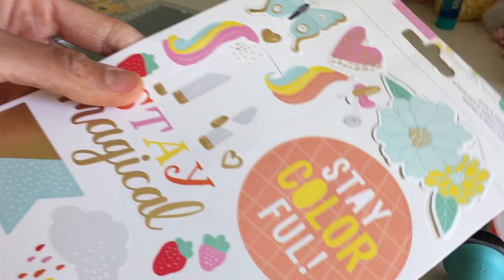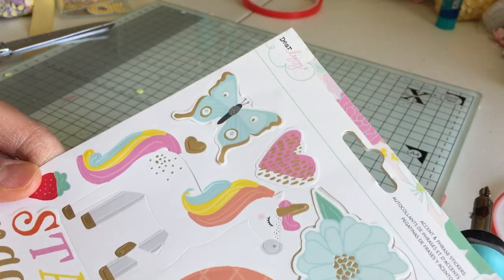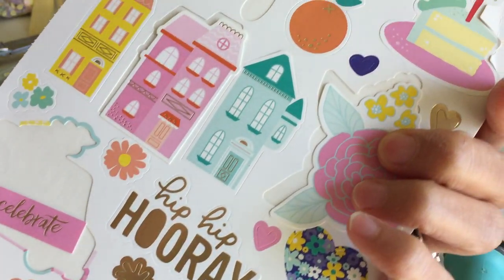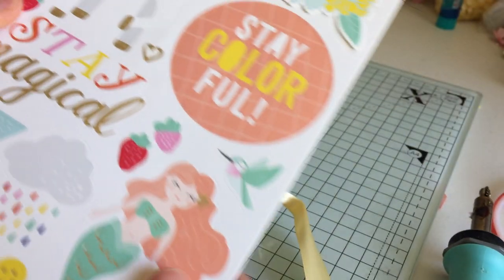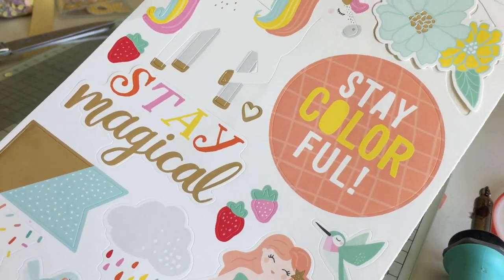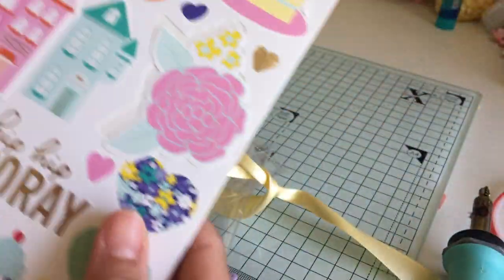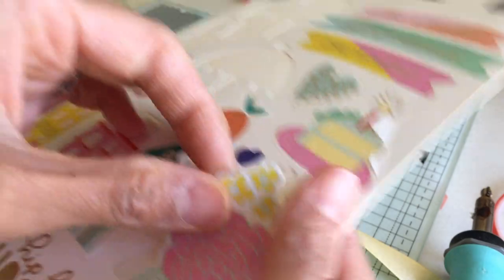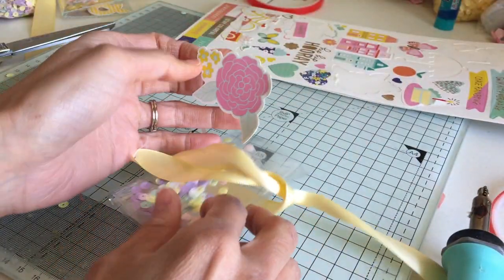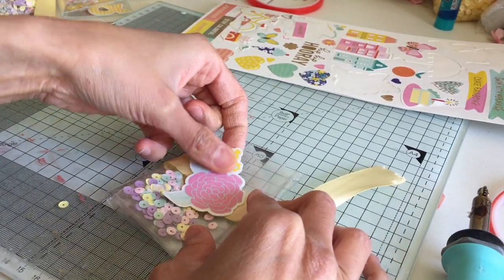I use this Dear Lizzie sticker sheet. It is, I don't know which collection this is, it's Accents and Phrases, but I don't know. It's a really pretty collection and that's probably what made it pop. You can use the thicker chipboard ones that will look really pretty. I originally had them on, but I really just liked the way it looked with the sticker.